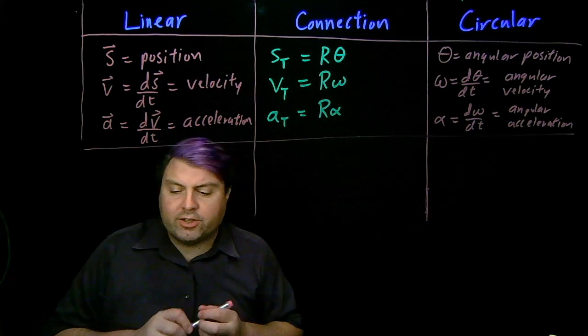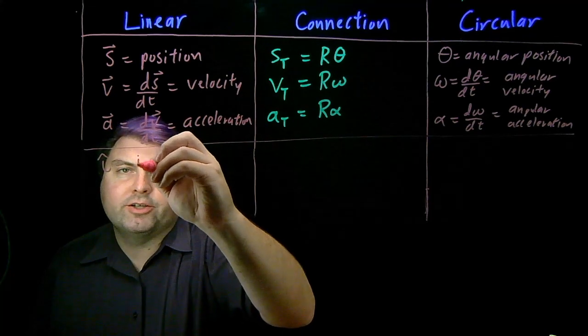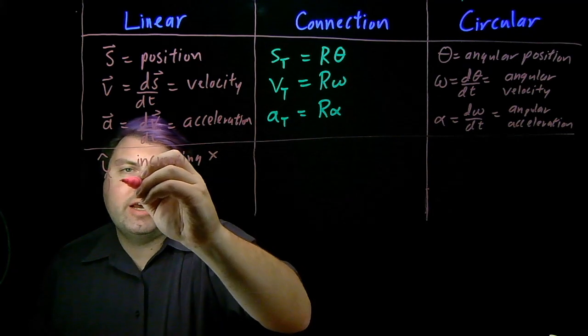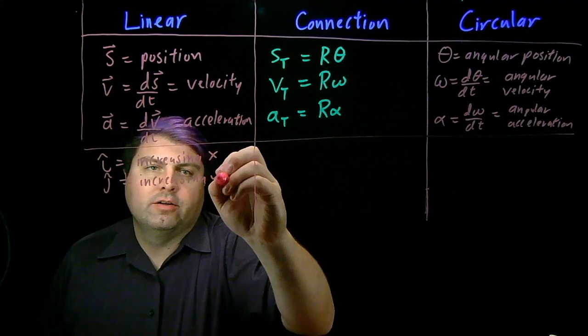So in our directions, we also can talk about i hat, which is the direction of increasing x, and j hat, which is the direction of increasing y.